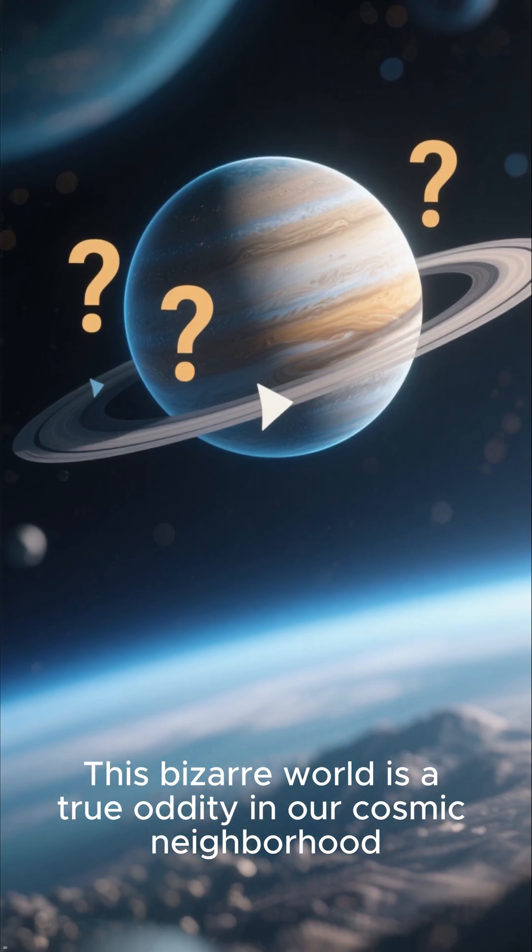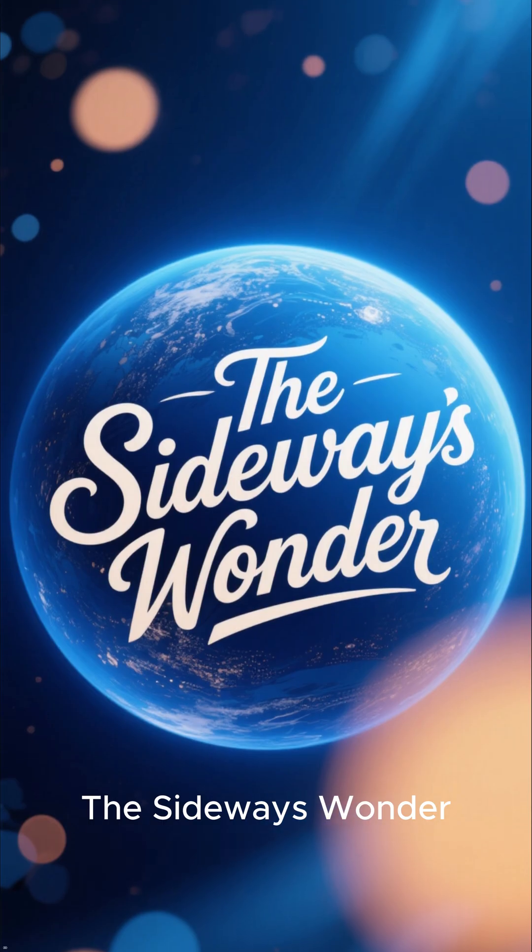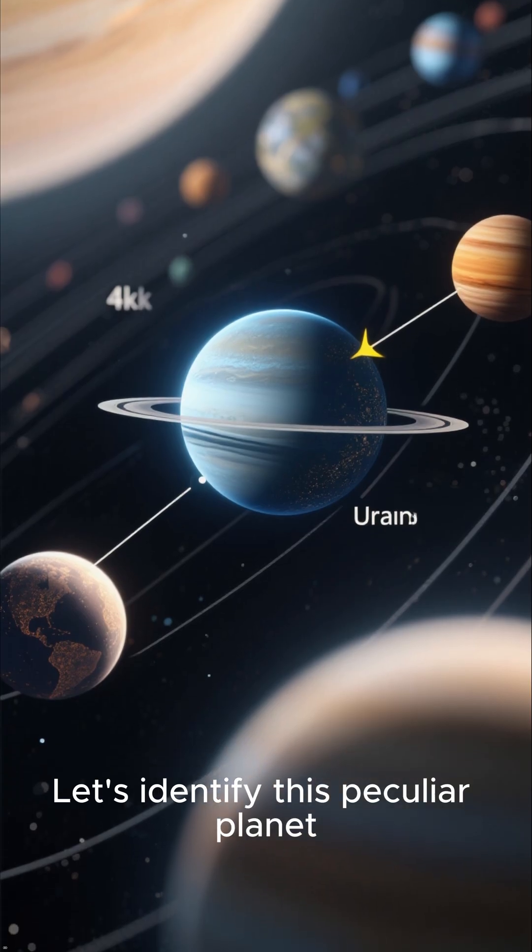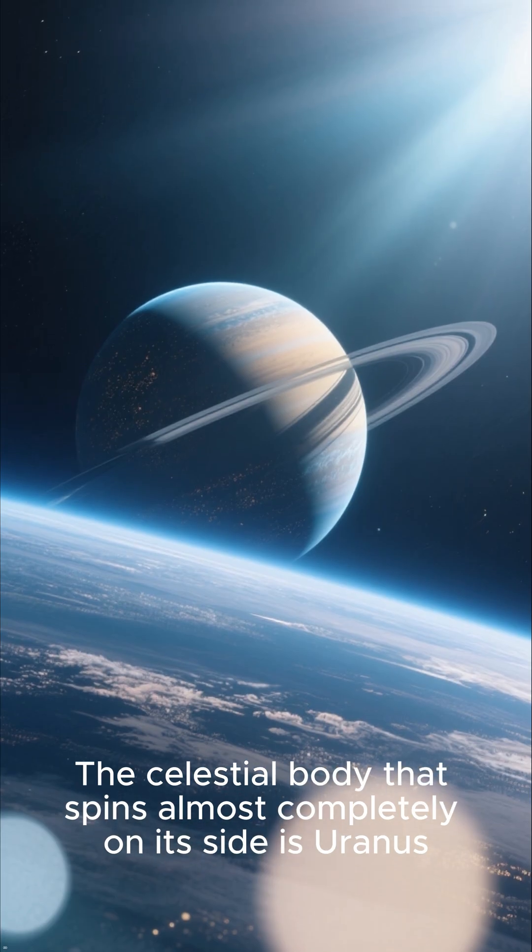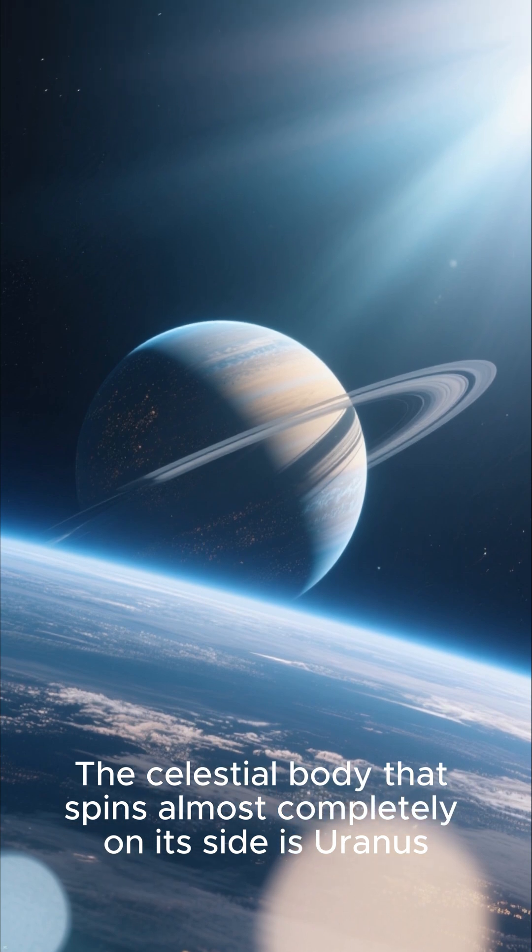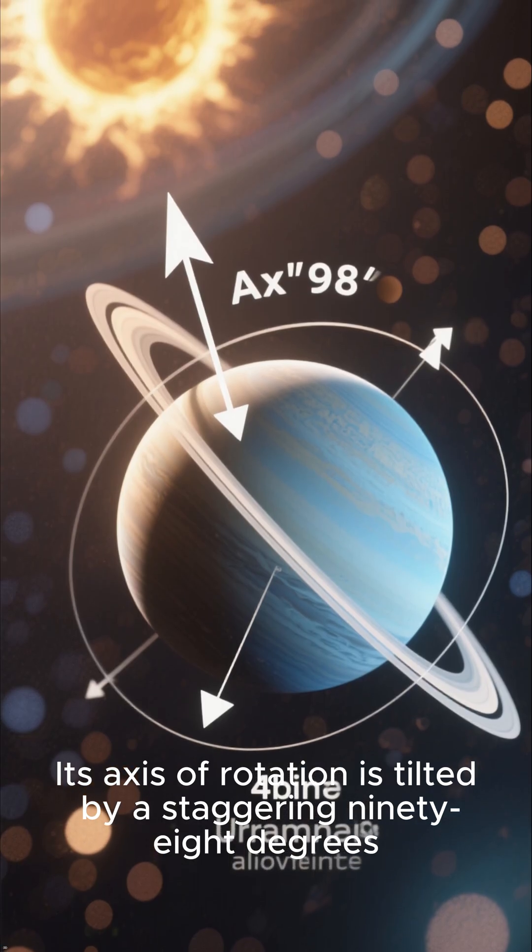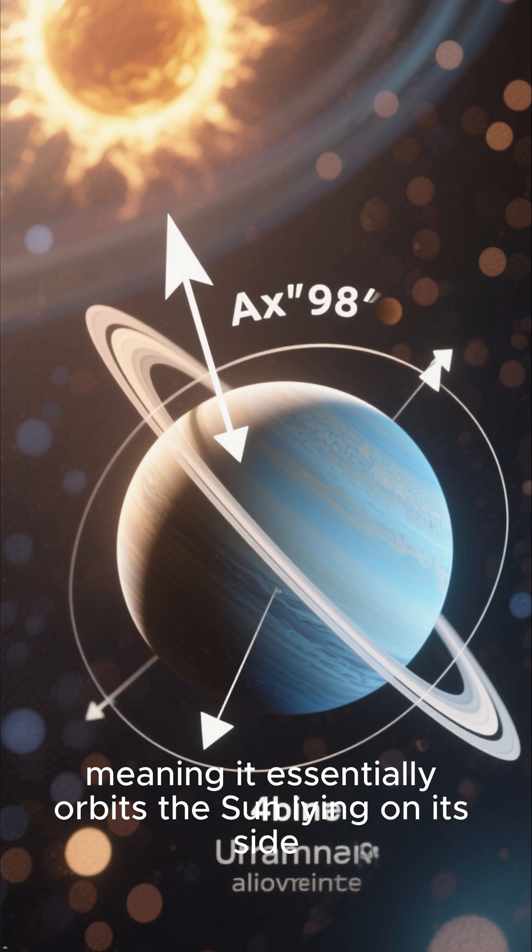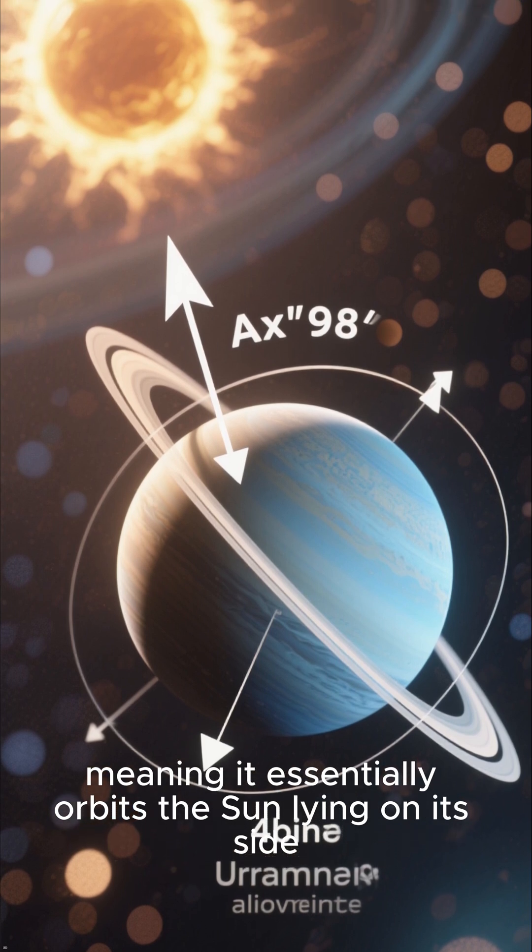This bizarre world is a true oddity in our cosmic neighborhood. The sideways wonder - the celestial body that spins almost completely on its side is Uranus. Its axis of rotation is tilted by a staggering 98 degrees, meaning it essentially orbits the sun lying on its side.